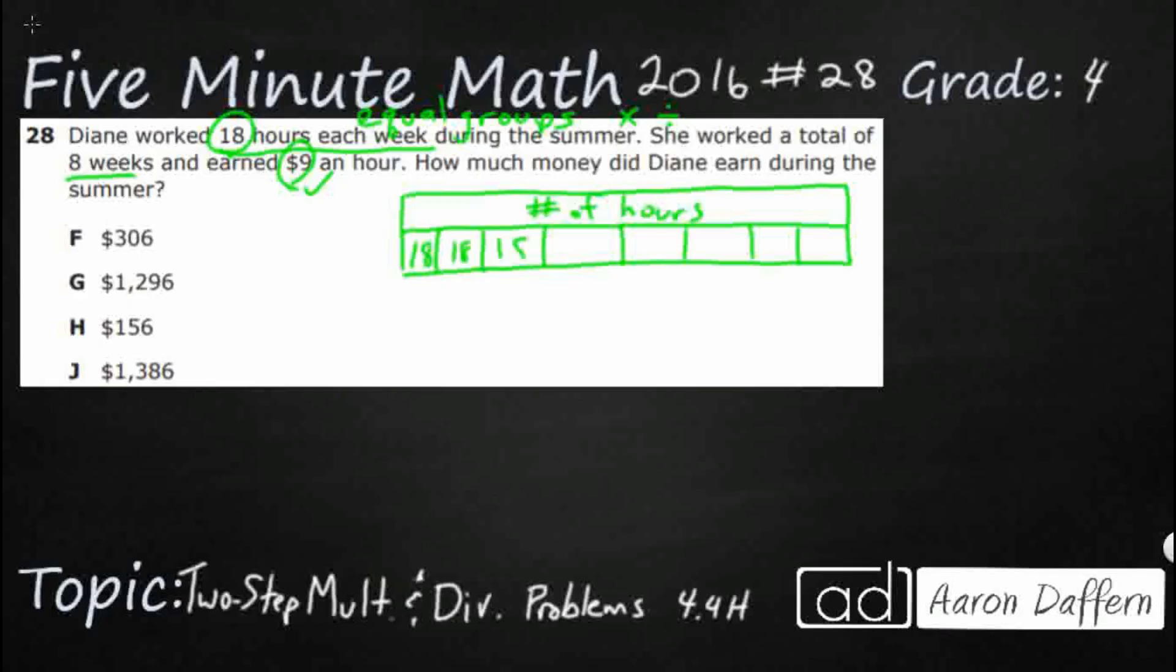So one, two, three, four, five, six, seven, eight. So there we go. I've got my eight weeks of 18 hours each, my equal groups. So this definitely looks like it's going to be a multiplication problem. We've got eight groups of 18. So I'm probably going to use the commutative property to switch those numbers around, those factors.